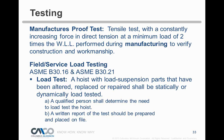As a manufacturer, we load test our equipment before it ships, manufacturing at two times the rated working load limit to verify workmanship. In the field, per ASME B30.16 and B30.21, a hoist with load suspension parts that have been altered, replaced, or repaired shall be statically or dynamically load tested. That's the only time you're required to do it in the field. If the hoist is operating fine and periodic inspections show nothing wrong, you never have to do another load test. Some people do it yearly — that's great, you're doing better than the standard requires.